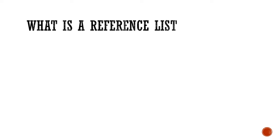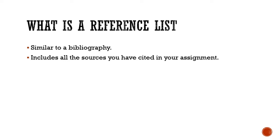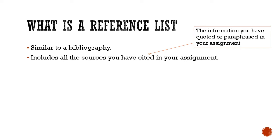So what exactly is a reference list? A reference list is similar to a bibliography, which you are possibly familiar with from school. However, a reference list is more precise and only includes the information that you have cited in your assignment. Cited means you have used a quote or paraphrased ideas from this source. You might not be familiar with the words quote and paraphrase yet, but do not panic — we will deal with both of these in the next video.